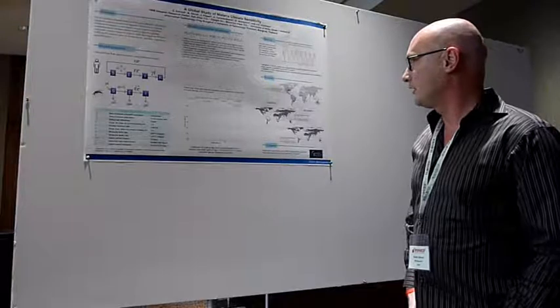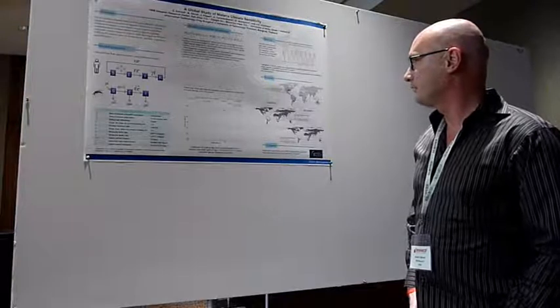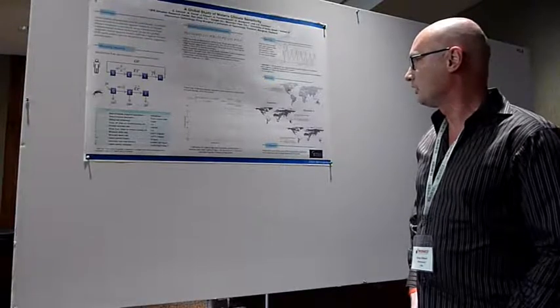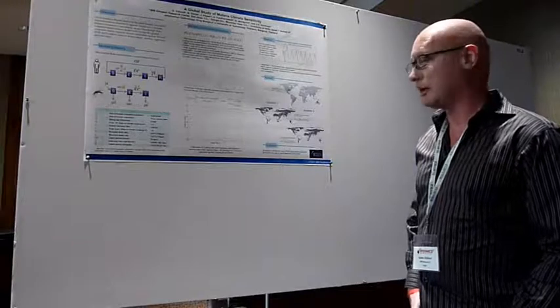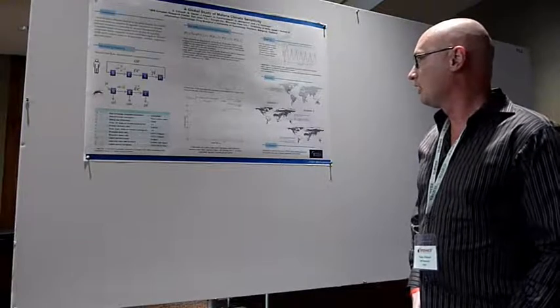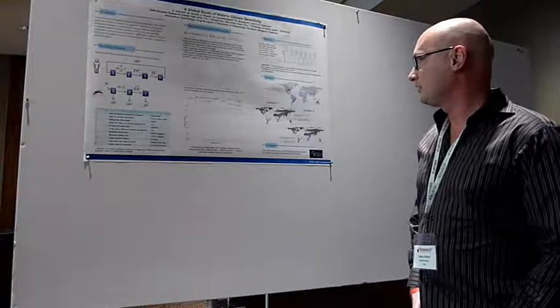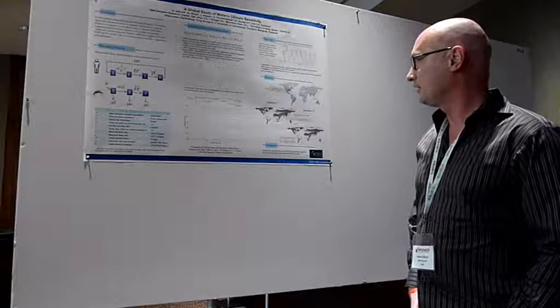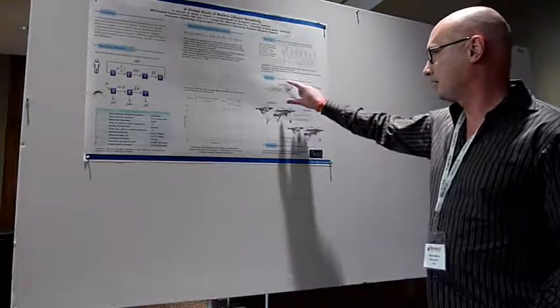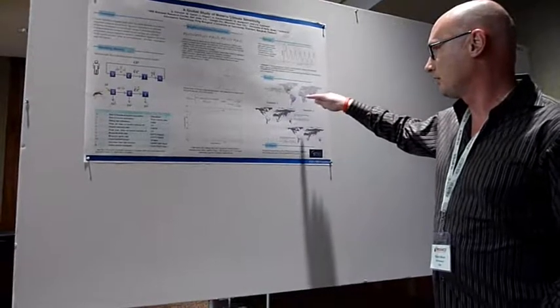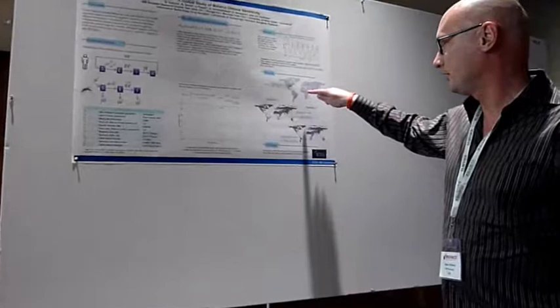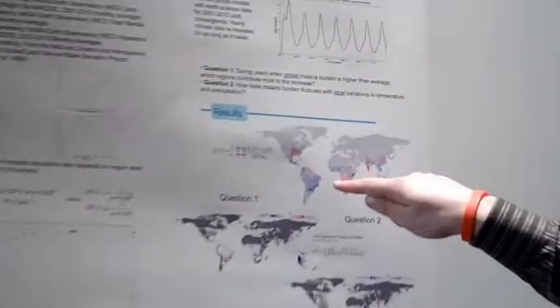The first question we ask is: during years when the global malaria burden is higher than average, as predicted by our model, which regions contribute most to the increase? That's essentially this map right here, where the red regions correspond to an increase in incidence and the blue regions correspond to a decrease in malaria incidence.